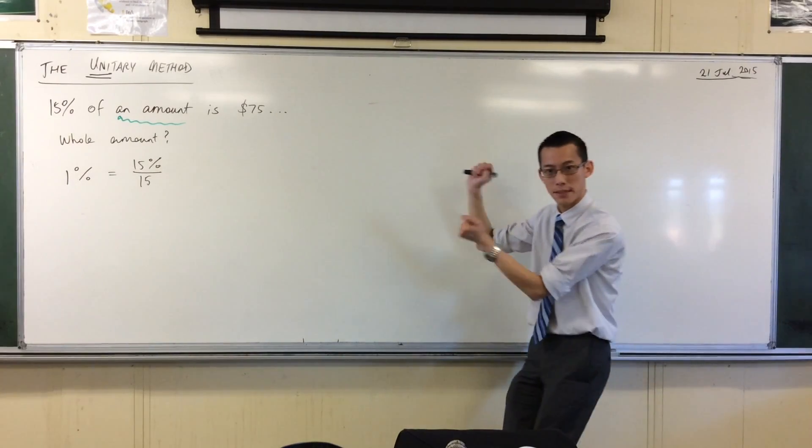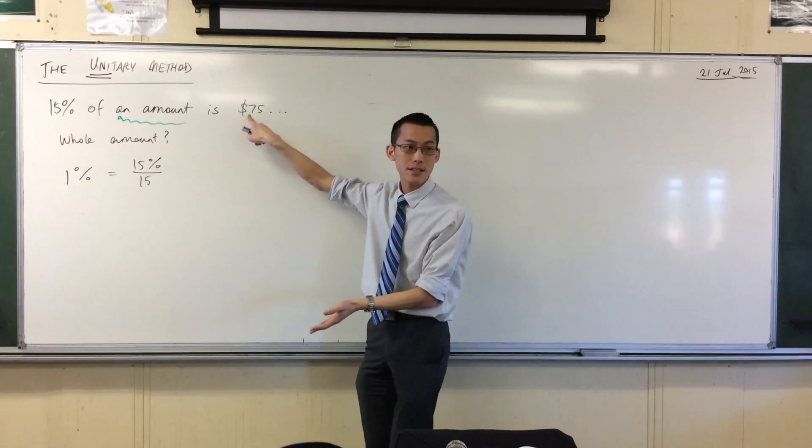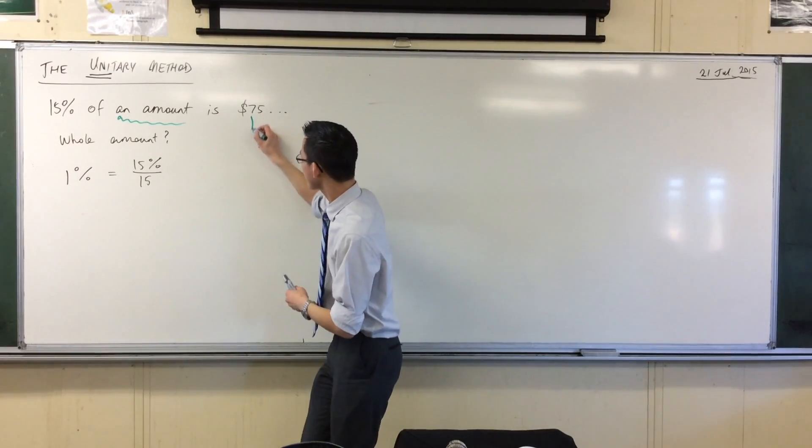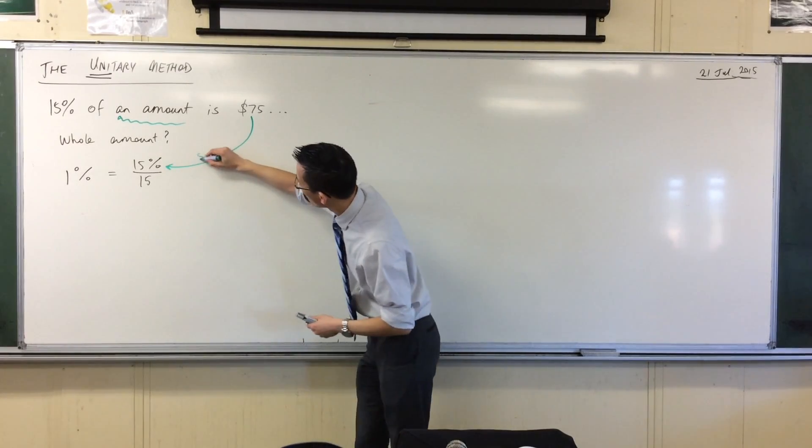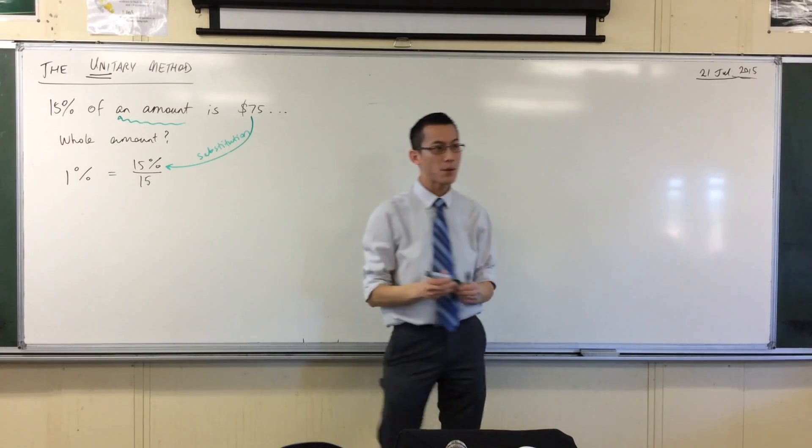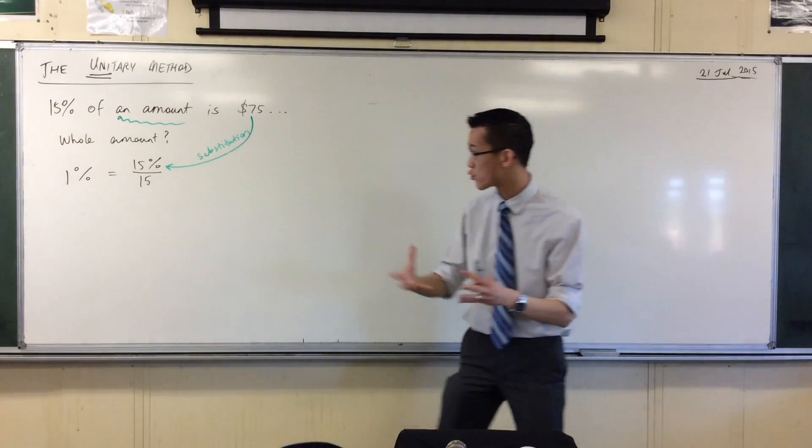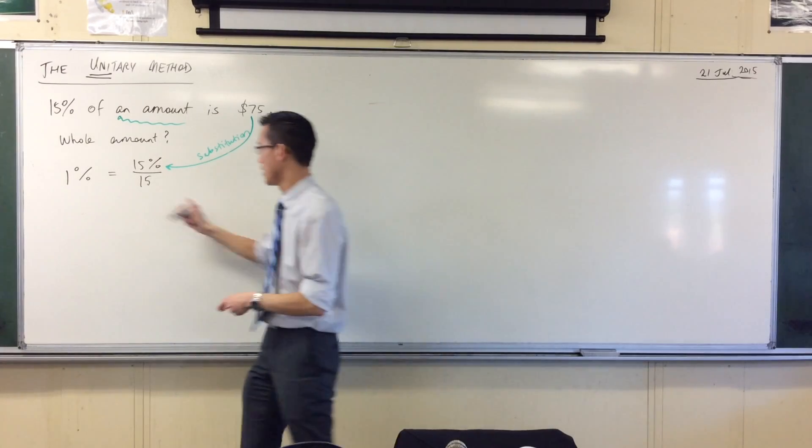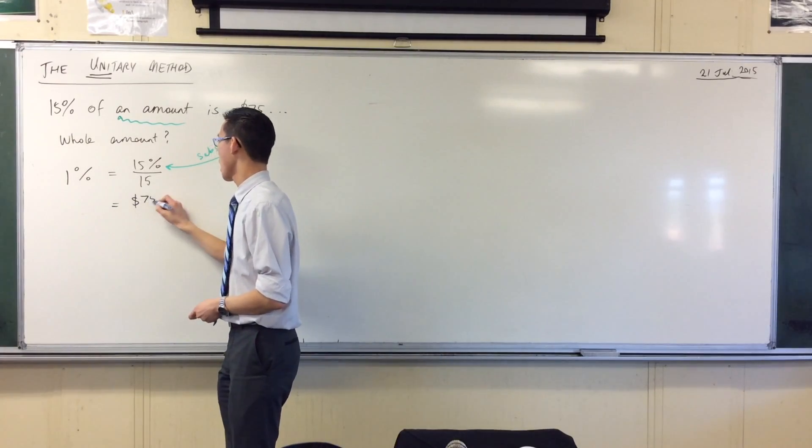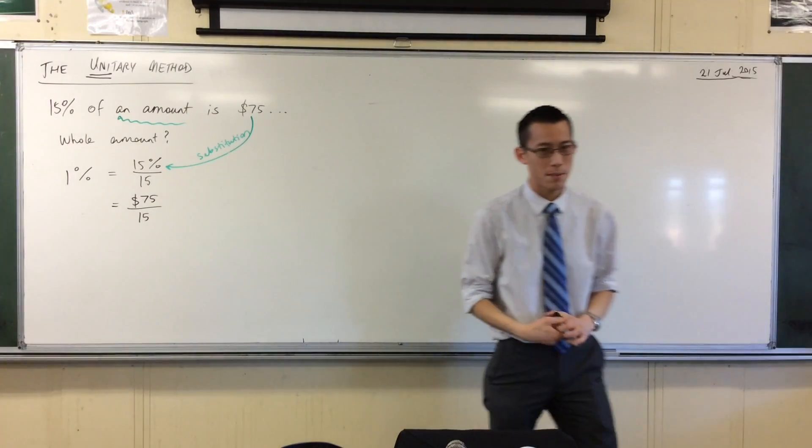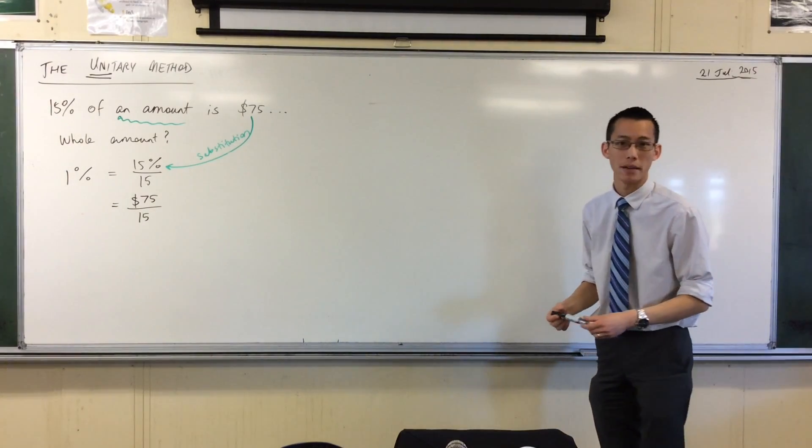So 15% in this particular question is $75. I'm going to do what we call a substitution. I'm going to swap out, I'm going to replace this 15% with $75, because that's what it is in this case. So it's $75 over 15. You see what I've done? I just had 15% before. I'm just replacing it, just swapping it.